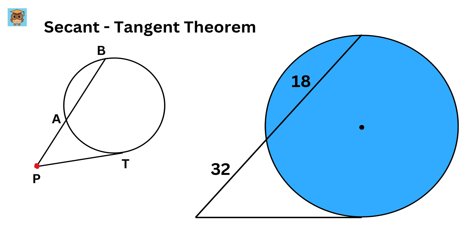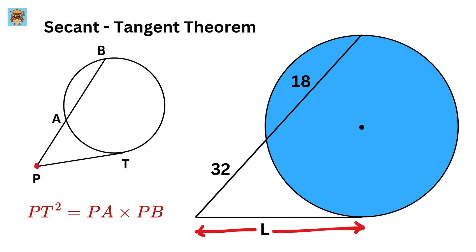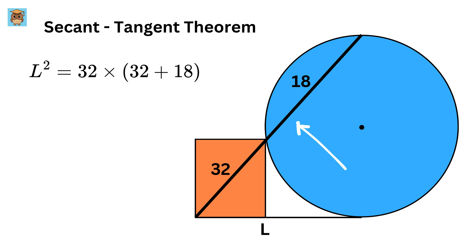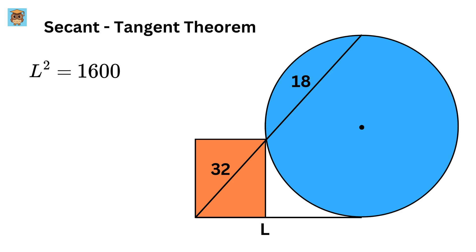The theorem says that the length of segment PT squared equals the length of segment PA times the length of segment PB. Here, if we label the length of this piece as L, then we get L squared equals the length of this diagonal, or 32, times the length of this entire secant, or 32 plus 18, which is 50 units. So L squared equals 1600, which gives L equals 40 units.